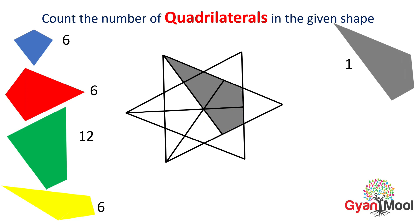Now we will count congruent quadrilaterals like this gray quadrilateral. These are 1, 2, 3, 4, 5, 6.